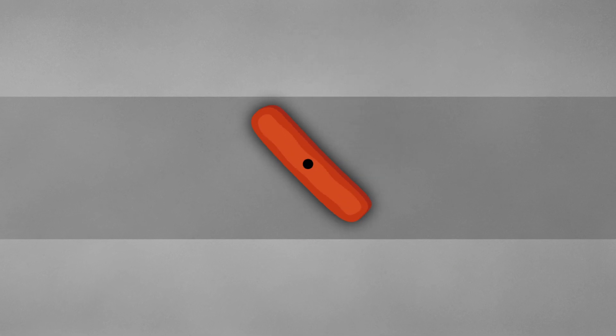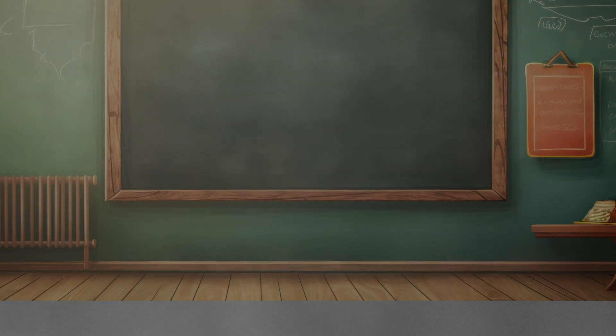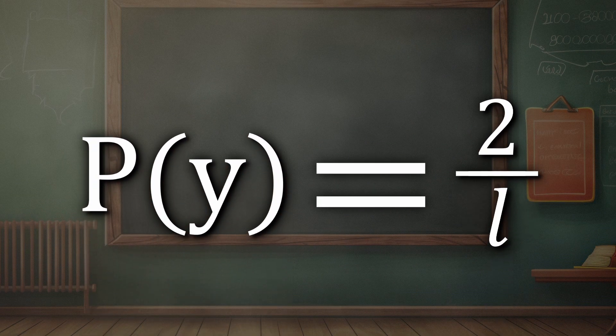Let the sausage have a length L. This would also mean that the distance between each line is also L. Now let's define a variable Y, which is the distance of the center of the sausage from the closest line. Y ranges from 0 to L over 2, and considering that the needle can fall anywhere with equal chance, the probability density function of Y is just 2 over L.